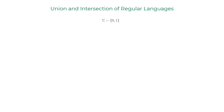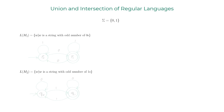If we consider 0 and 1 as the alphabet sigma, the language of machine m1 is strings with an odd number of zeros, and the language of machine m2 is strings with an odd number of ones. These two languages are regular because there exist DFAs that recognize both. Let's take a look at both of these DFAs and verify that they recognize both those languages.